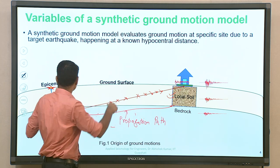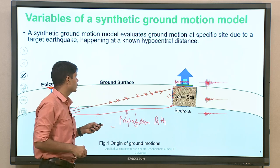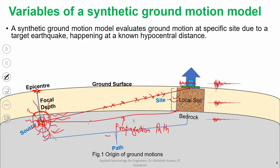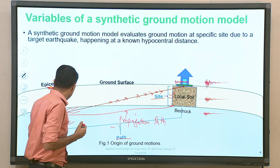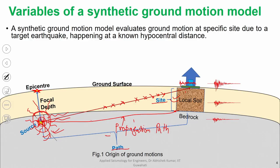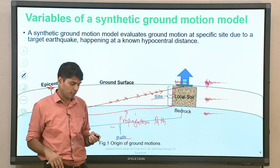So these are the variables — source variables, propagation path variables, and site variables. We have to take certain parameters which will be able to capture what is happening at the source, what is happening at the site, and what is happening along the propagation path.